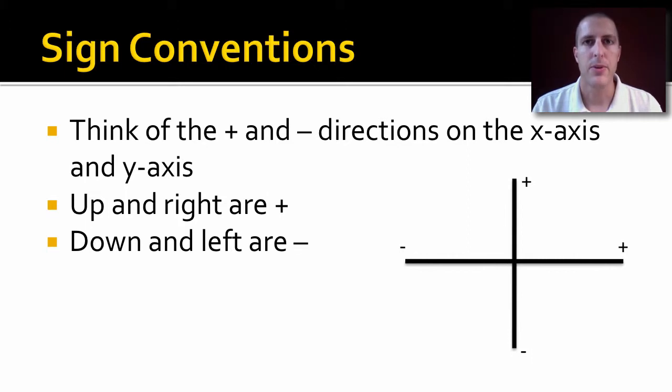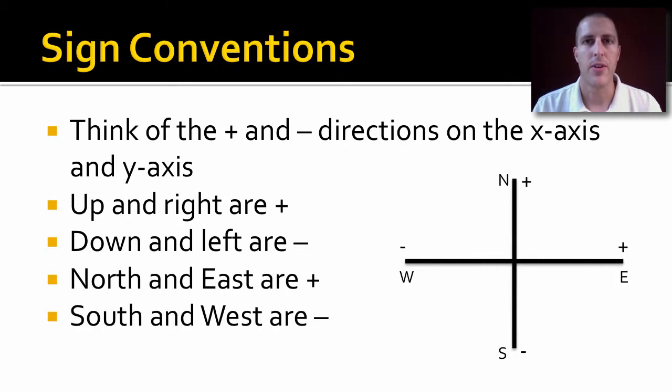And if we're talking about compass directions, we use the same axes. And we say north is going to be positive and east is going to be positive. And we say south and west are going to be negative. So, it's easiest to keep in mind that positive and negative x and y axis as you're figuring out what your signs mean.